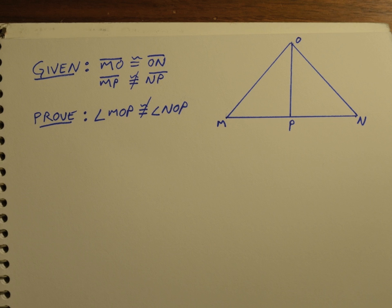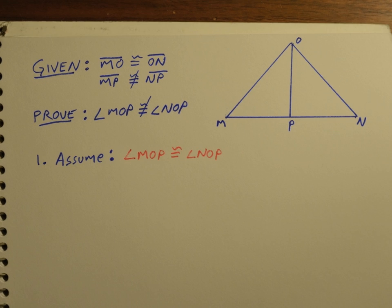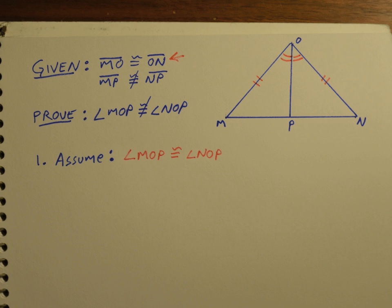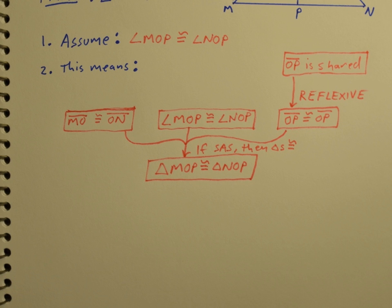Here's a geometric example. In this figure, we're given that segment MO is congruent to ON, and MP is not congruent to NP, and we want to prove that angle MOP is not congruent to angle NOP. So we first assume that they are congruent — in other words, that those little angles are congruent. With that first piece of given information, we know that MO is congruent to ON, and we've got that shared side, so we can prove that those two triangles — MOP and NOP — are congruent, using Side-Angle-Side.